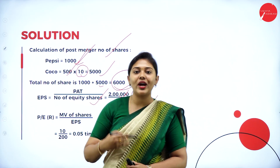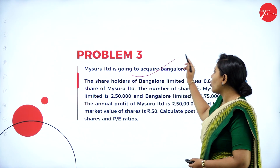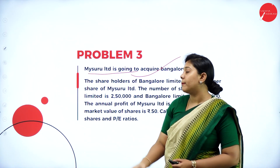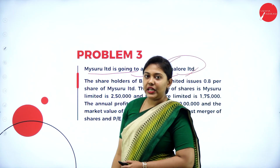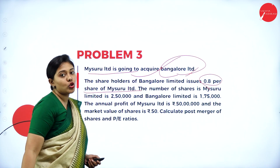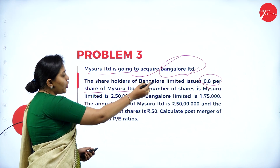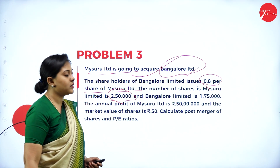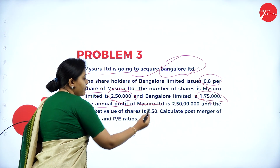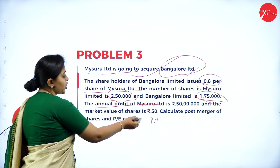For better clarity, let us take one more problem. Problem 3: Mysore Limited is going to acquire Bangalore Limited. So Mysore Limited is the acquirer company and Bangalore is the target company. The shareholders of Bangalore Limited are issued 0.8 shares per share of Mysore Limited. Mysore Limited has 2,50,000 shares and Bangalore Limited has 1,75,000 shares. The annual profit after tax is 50 lakh and the market value of shares is 50 rupees.